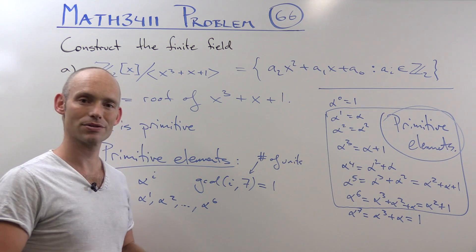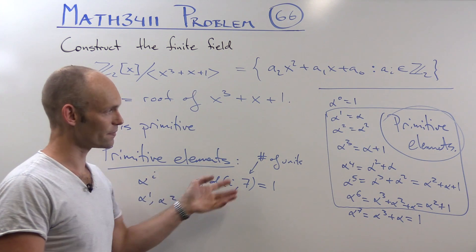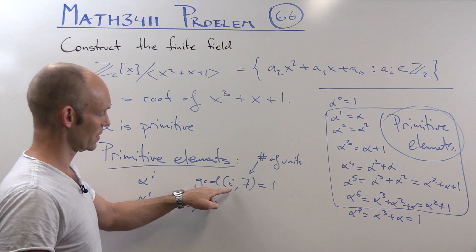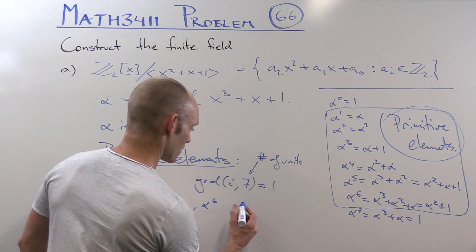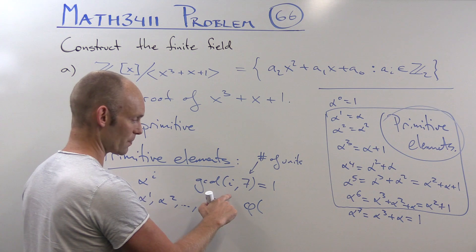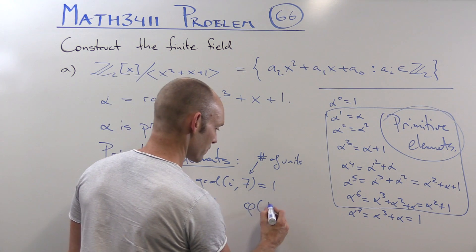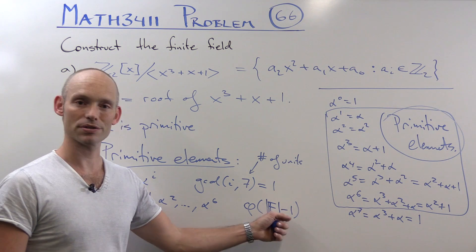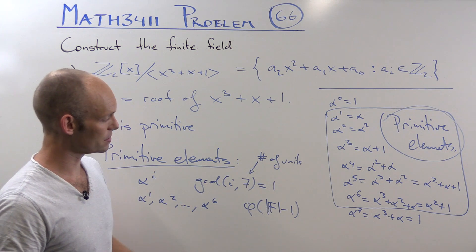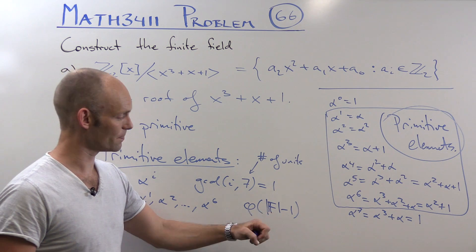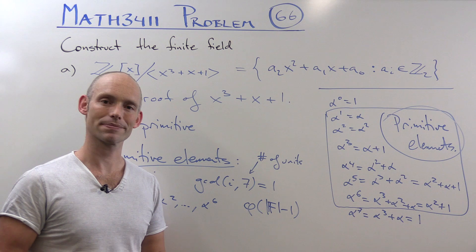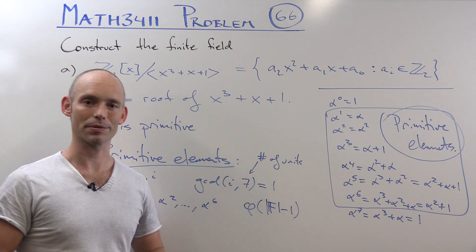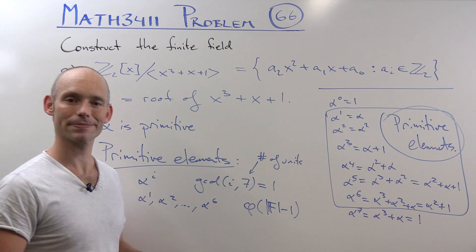Now that's a bit of a special case. In general, if we have a finite field, we won't have just about everything being a primitive element. In general, we'll have φ(q − 1) primitive elements, where q is the size of the field. In this case we've got 6 primitive elements, which is 7 − 1, but in general this number could be different. So anyway, thank you very much.